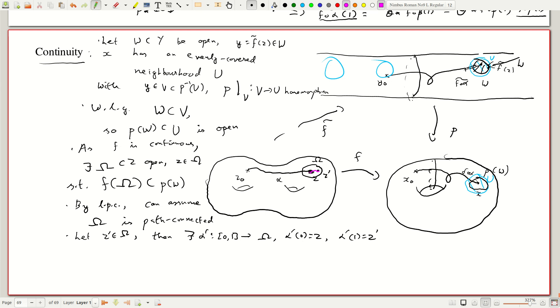And remember this was our old path alpha, which we used in the definition. So its image, well it may be squiggly, but it is contained here.